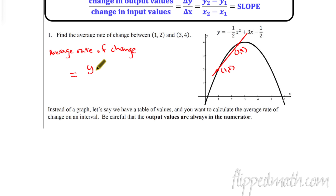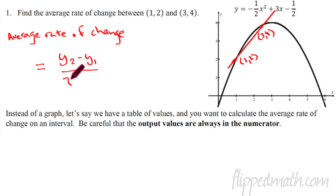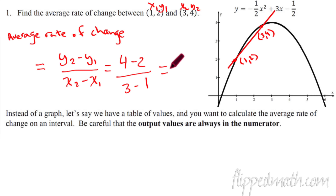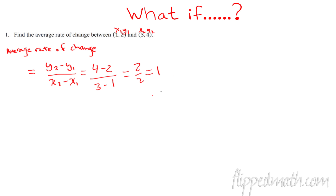The average rate of change equals y2 minus y1 over x2 minus x1. We designate each point as (x1, y1) and (x2, y2). I always like to choose the point with the larger number as x2. When we substitute in, we get (4 minus 2) over (3 minus 1), which is 2 over 2, which equals 1. That is the average rate of change.